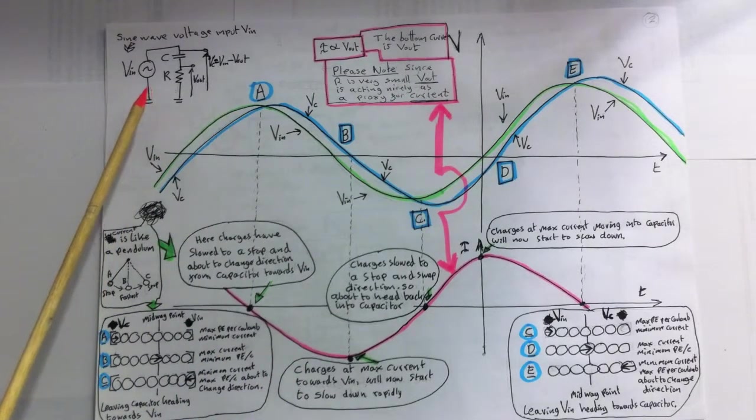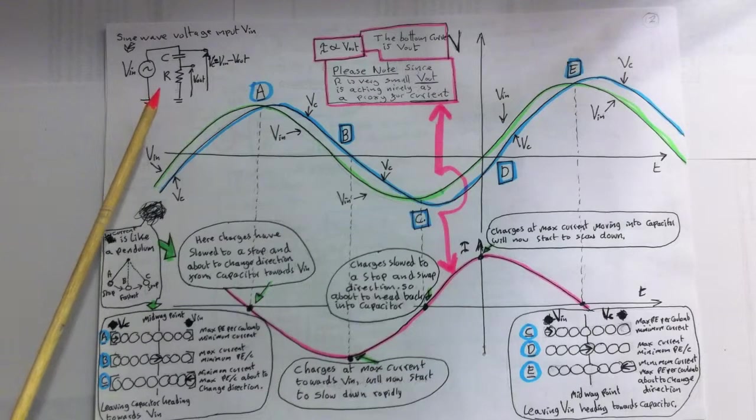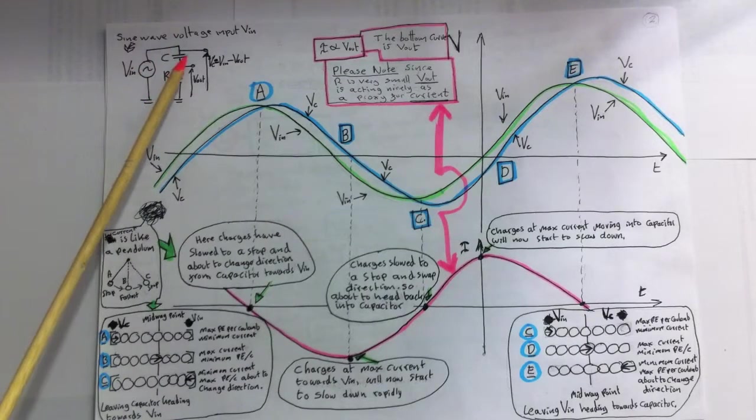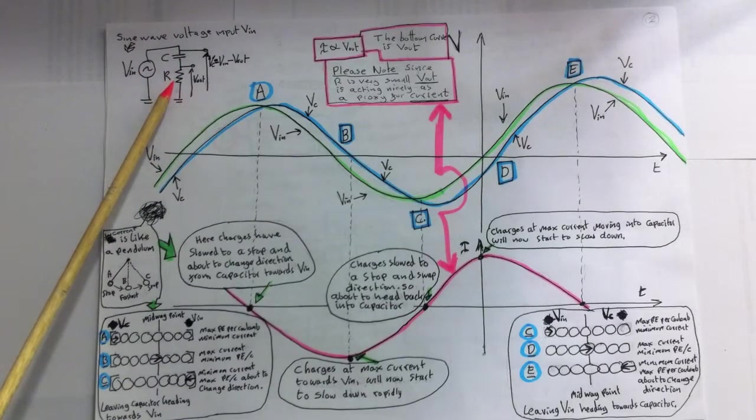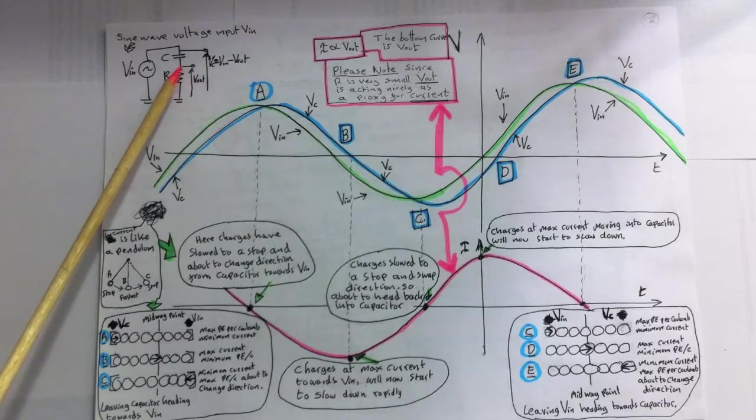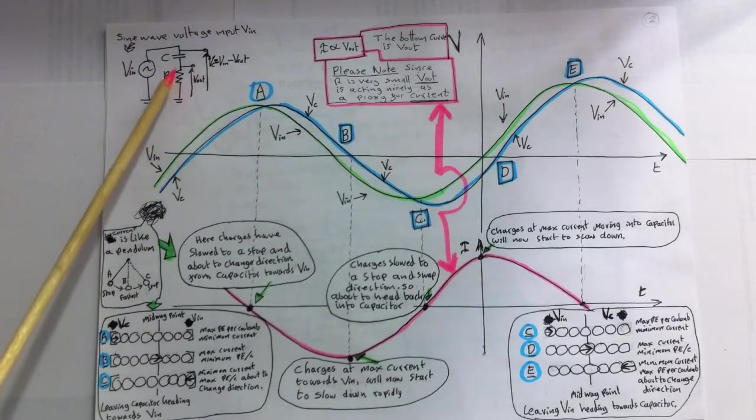To the left is the RC circuit fed by a sine wave we will use for this example. So a sine wave is feeding this circuit. We've got a capacitor. We've got a resistor. We're measuring the voltage across the resistor. Remember, the voltage here is a proxy for the current because the resistance is so small that when you drop a voltage across a resistor, obviously, that is completely proportional to the current.